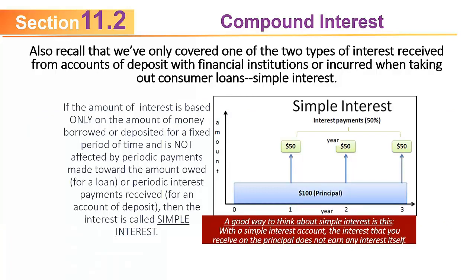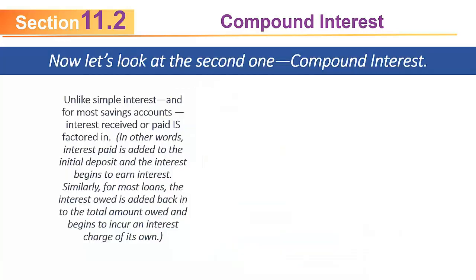Remember, simple interest doesn't pay interest on the interest earned. Compound interest, unlike simple interest, factors in the interest: interest paid is added to the initial deposit and begins to earn interest itself. Similarly, if talking about a loan, the interest owed is added back into the total amount owed and begins to incur an interest charge of its own. That contrasts with simple interest, where the interest itself never collects interest.